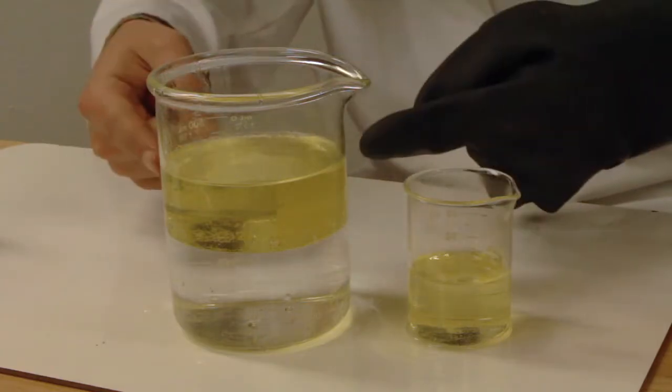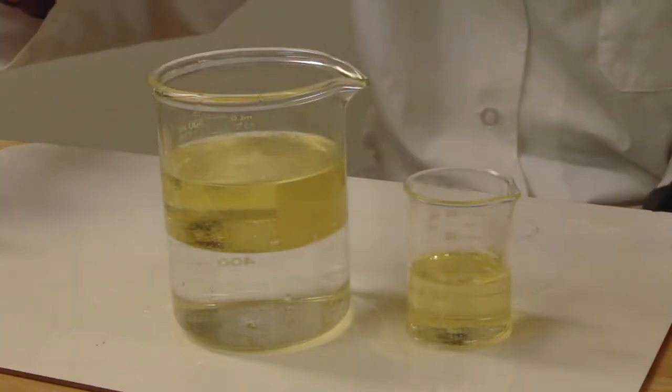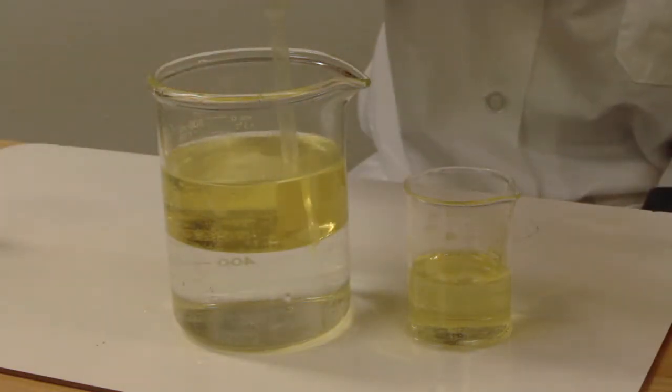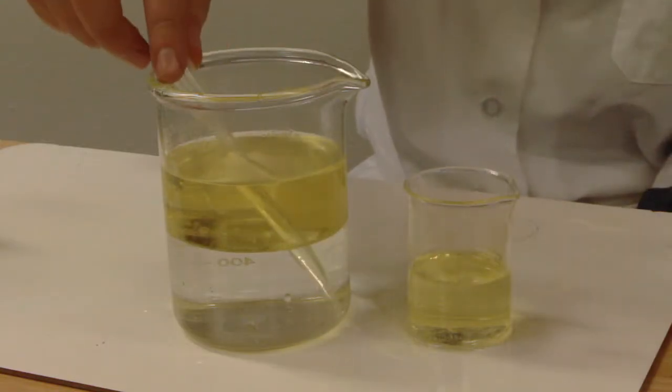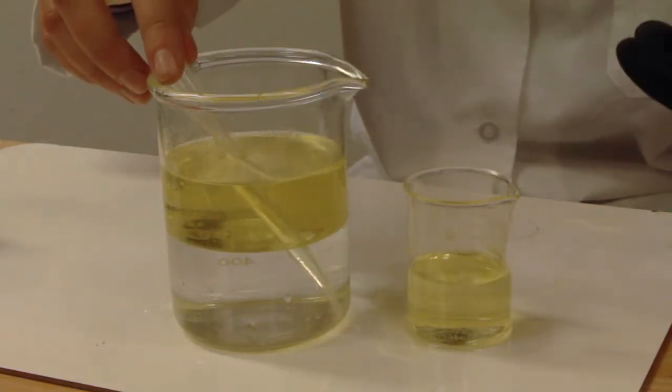We have Pyrex glass, we have vegetable oil, and water. So if I take this pipette and put it down into the vegetable oil and water, we can see that as the light hits those objects, it bends in different ways.